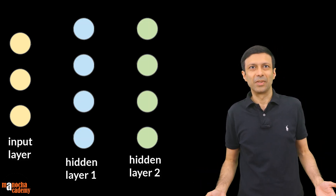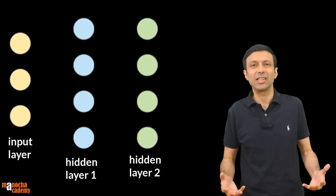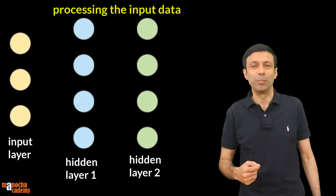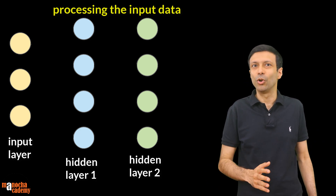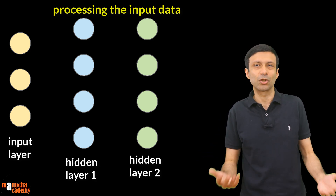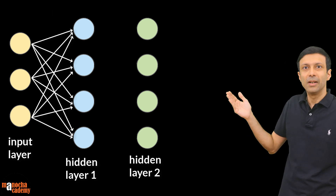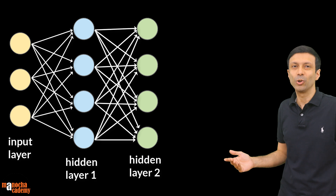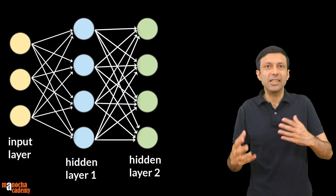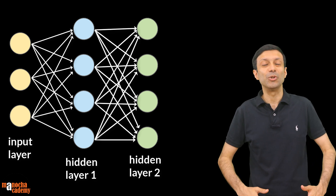Next are the hidden layers. A neural network may have one or more hidden layers, and these layers are responsible for processing the input data. Each neuron can receive multiple inputs through the dendrites, and each neuron can transmit the output to multiple neurons via the axon terminals. So we are going to interconnect the nodes of one layer with the nodes of the next layer with the help of arrows as shown here. The hidden layers contain these layers of interconnected nodes and they are responsible for processing the input and producing the output.